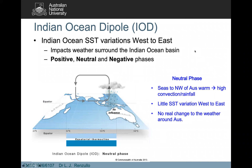In the neutral phase, sea surface temperatures to the northwest of Australia are typically warm, and high convection rainfall is typical in the area, but there's little sea surface temperature variation west to east, so that doesn't really change the weather around Australia.